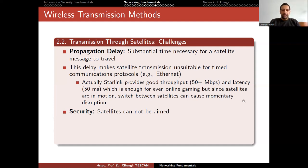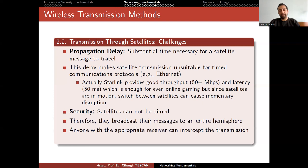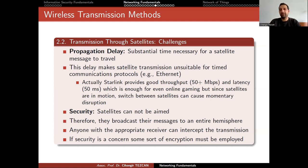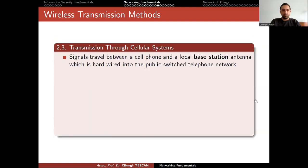Another security problem: satellites cannot be aimed. Therefore, they broadcast their messages to an entire hemisphere, and anyone with the appropriate receiver can intercept the transmission. If security is a concern, some sort of encryption must be employed. Encryption is essentially free — you don't need to pay for patents, and computationally it is very fast. Nowadays you can encrypt hundreds of gigabits per second, which is faster than your hard drive can write, so this is not much of a problem.